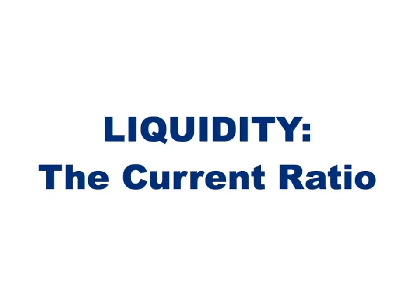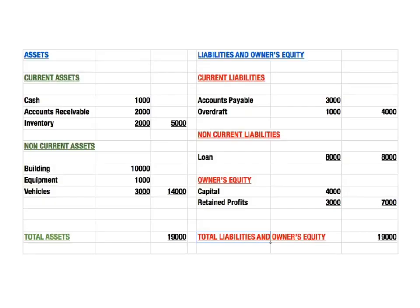This video is going to show how we can use a balance sheet to measure a business's liquidity, and we're going to do that using the current ratio. Liquidity refers to the ability of a business to pay its short-term debts as they fall due. Other videos on this channel will explain this, but on a balance sheet the short-term debts are the current liabilities.